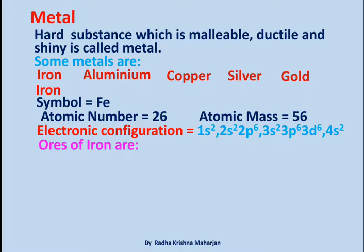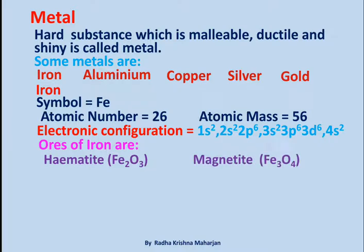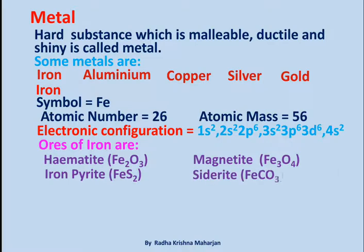Ores of Iron are: Hematite (Fe2O3), Magnetite (Fe3O4), Iron Pyrite (FeS2), and Siderite (FeCO3).